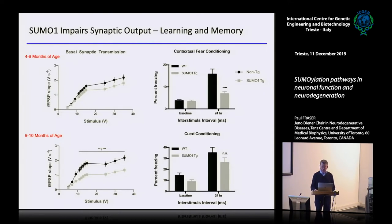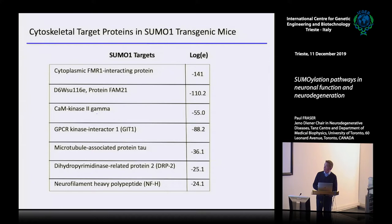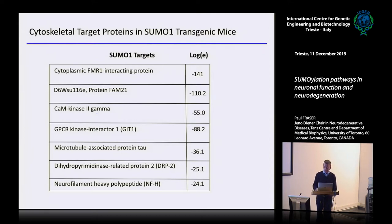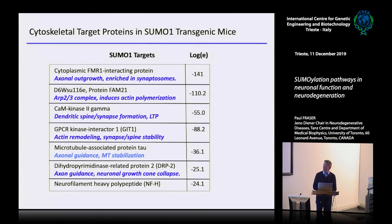We went to look for mechanisms underlying not only the cognition problems but also the factors that reduce synaptic density. Going back to the cytoskeletal proteins from the proteomics, some notable ones include FMR1, CaM kinase, and also the microtubule-associated tau protein. These are very high-confidence SUMOylation targets, and functionally they are involved in axonal outgrowth, particularly related to actin remodeling.